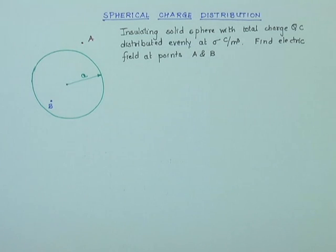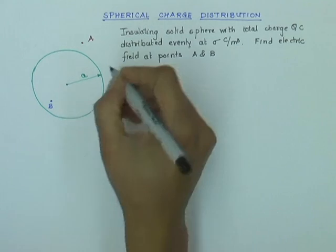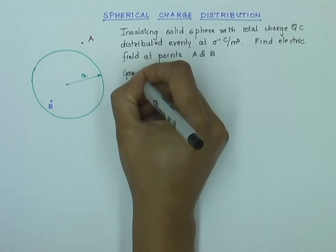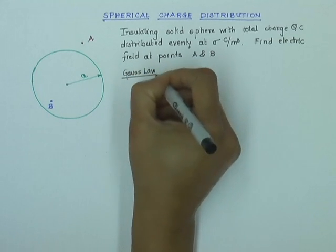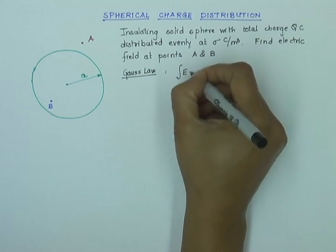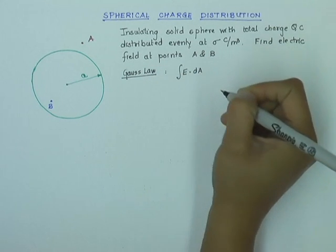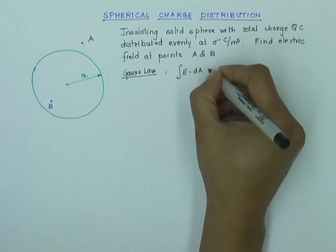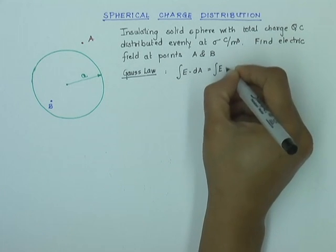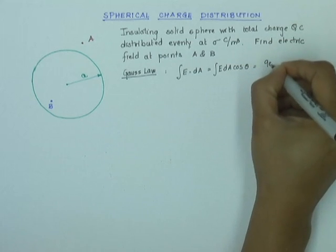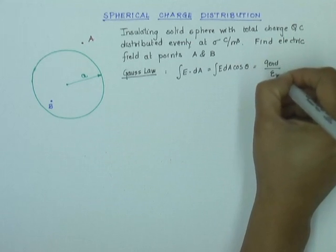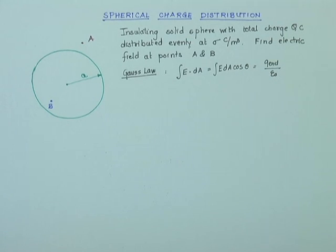Let us see if we can do this using Gauss's law, because the charge distribution is nice and symmetric, and we will learn how to use Gauss's law for these kinds of charge distributions. Gauss's law gives us the surface integral of E dot dA over a Gaussian surface — which is E dA cos θ — equal to Q enclosed over epsilon zero.